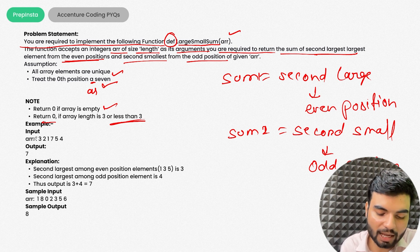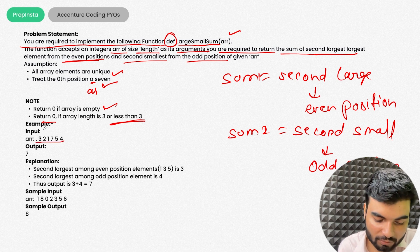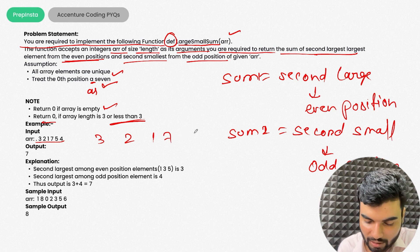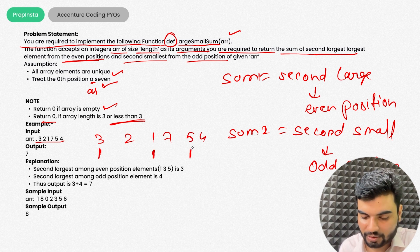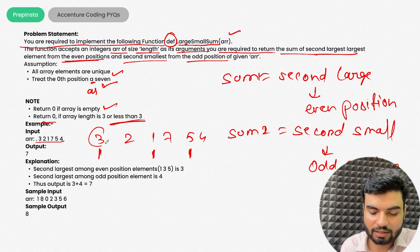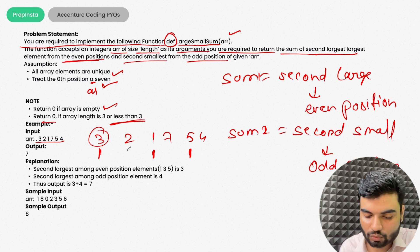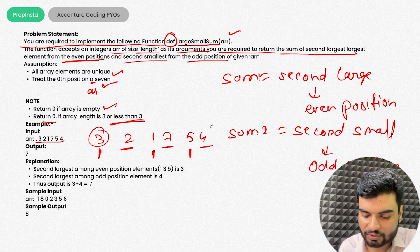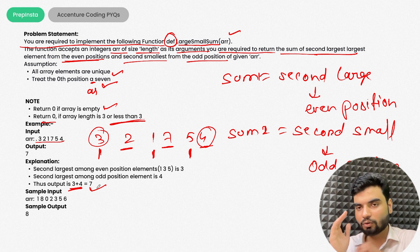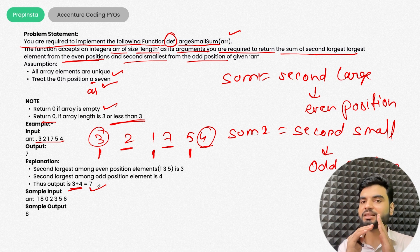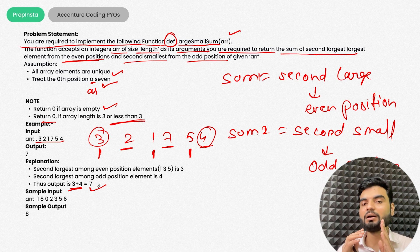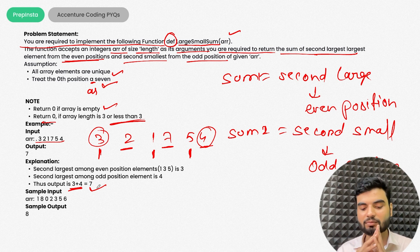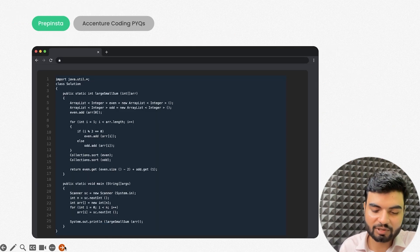For example, given the array [3, 2, 1, 7, 5, 4]: even-position elements are 3, 1, 5 and odd-position elements are 2, 7, 4. The second largest from even positions is 3. The second smallest from odd positions is 4. Their sum is 7 — that's the expected output.